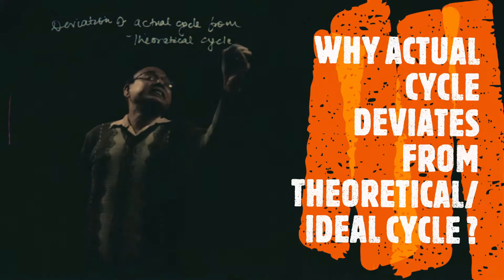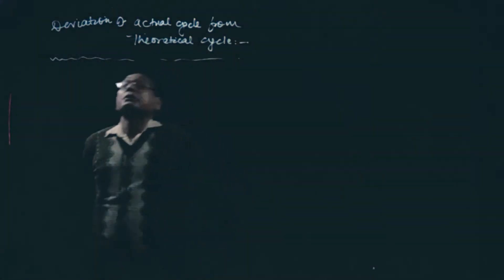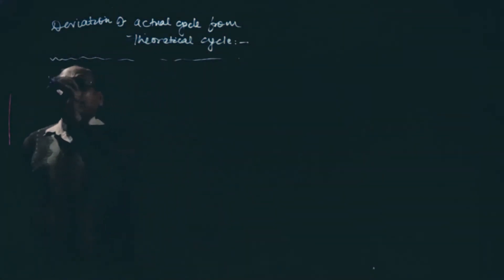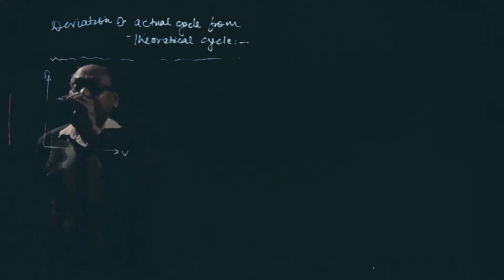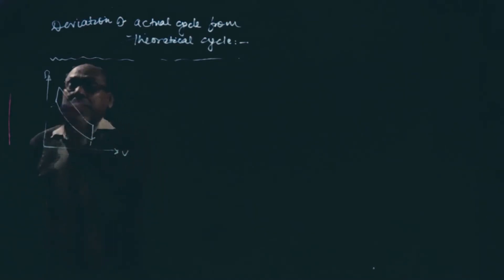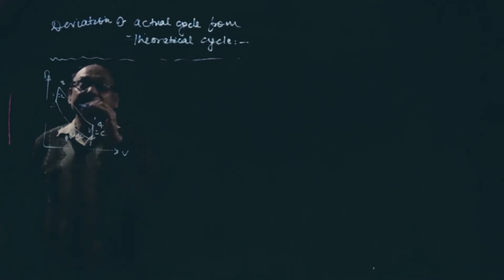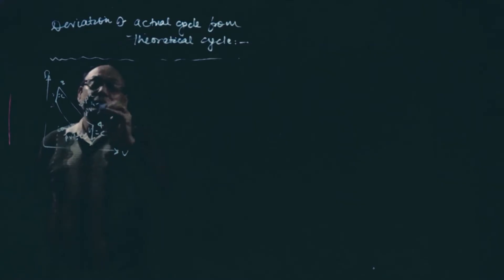There are so many reasons why this cycle differs. If we see the PV diagram of the Otto cycle that we have already seen — theoretical means like this: 1 to 2, 2 to 3, 3 to 4. So 1 to 2 is volume constant, 2 to 3 is also volume constant, this is compression, this is expansion where PV to the power gamma equals C. This is heat addition and this is heat rejection.